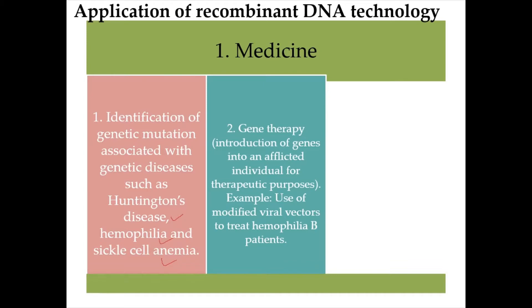For example, the use of modified viral vectors to treat hemophilia B patients. Hemophilia B is caused by deficiencies of blood clotting factor 9. The modified virus vectors are injected into the patients and the vector integrates into the liver cells, triggering them to produce and secrete the required clotting factor.